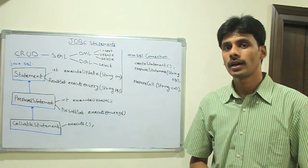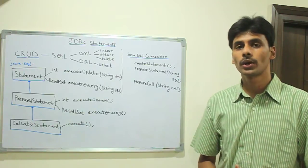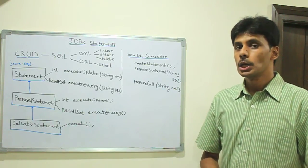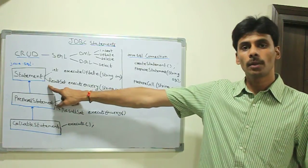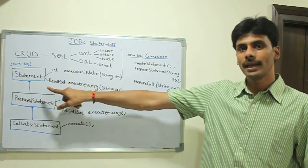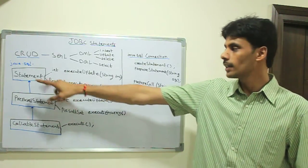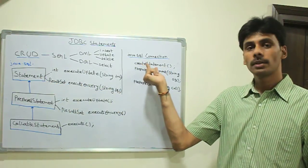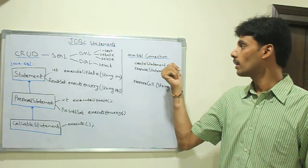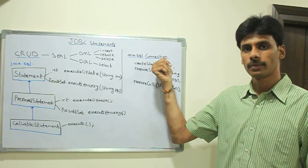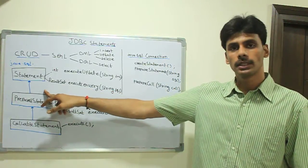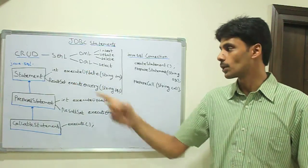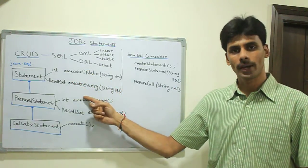In your Java or JDBC application, once you create a connection to the database using the driver manager, you can create the Statement object, which is the base interface in the java.sql package. You can create a Statement object by invoking the createStatement method on a connection object. Once you get the Statement object, you have two methods on it: executeUpdate and executeQuery.